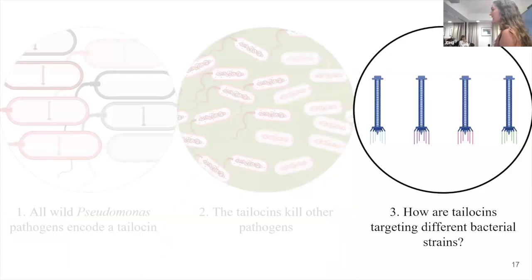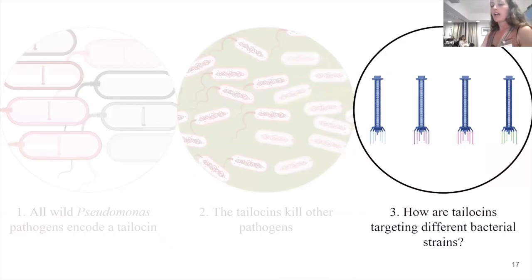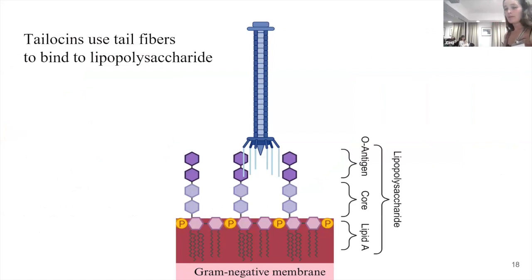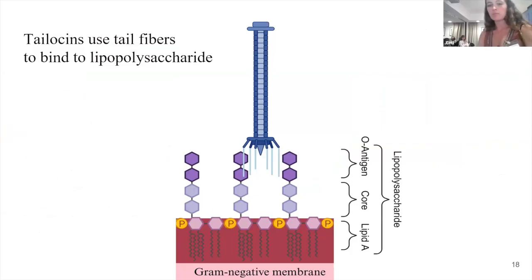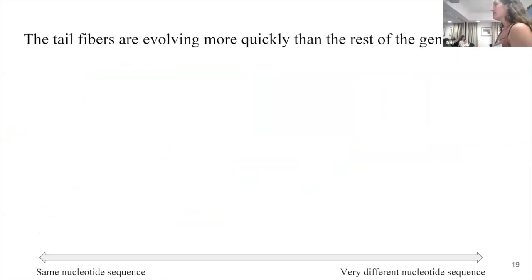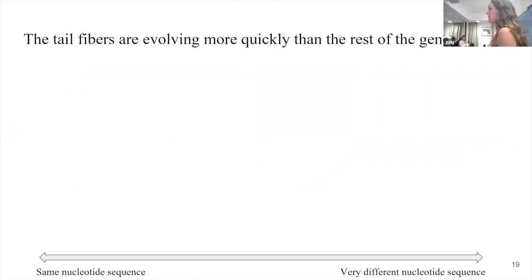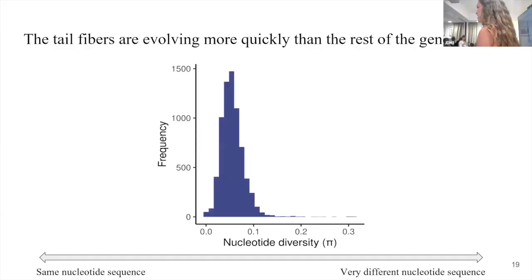This means there must be many different versions of the talosin able to kill different pathogens. So we wondered how many talosin variants are in the population, and how talosins target different bacterial strains. Much like some phage, talosins use their tail fibers to bind to the lipopolysaccharide. In my case, these talosins only target gram-negative bacteria and often bind to the O-antigen, the outermost polysaccharide chain. We hypothesized there must be a few different tail fiber variants within the population. To test this, we did a bioinformatic approach calculating nucleotide diversity for all genes across the entire genome, to see if any talosin genes are evolving more quickly — we expected the tail fibers would show more genetic variation.